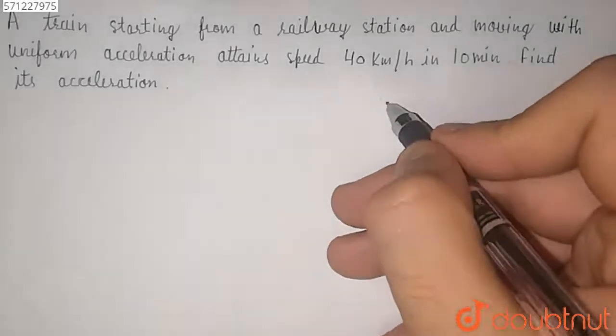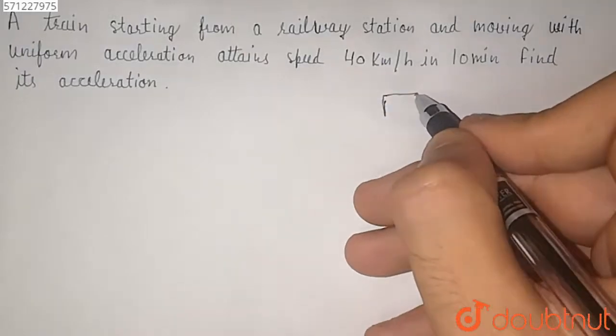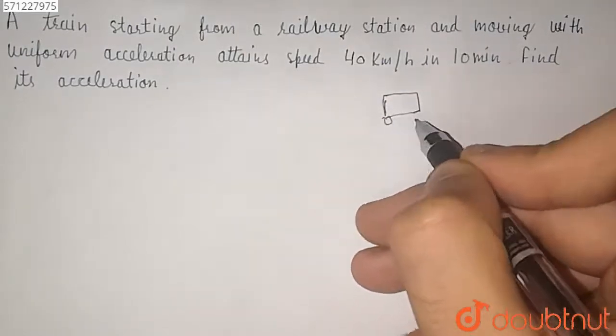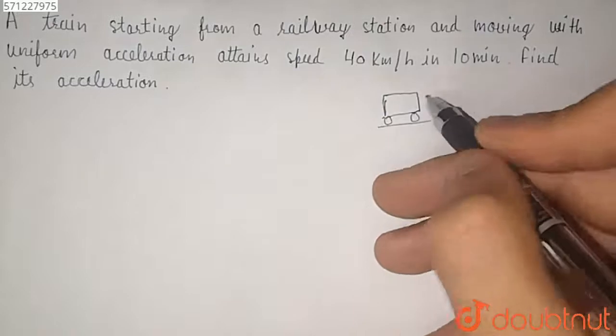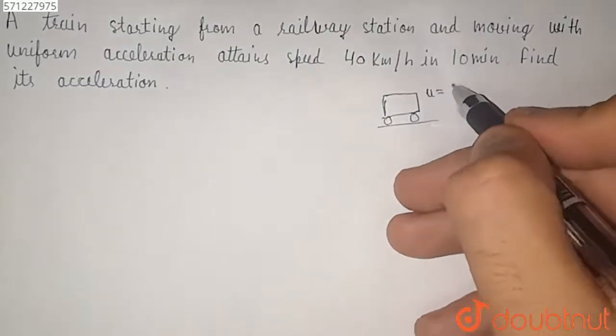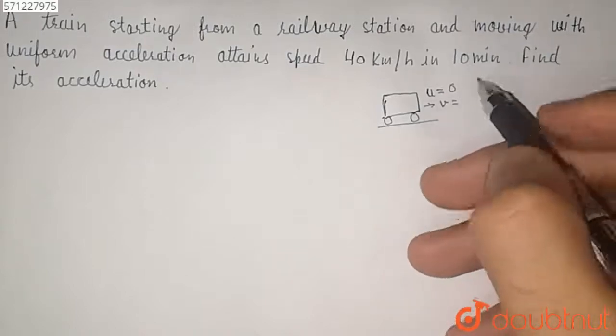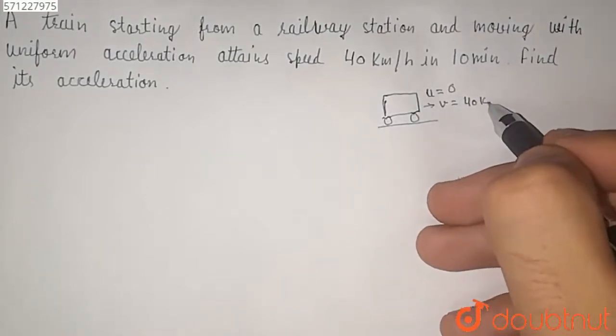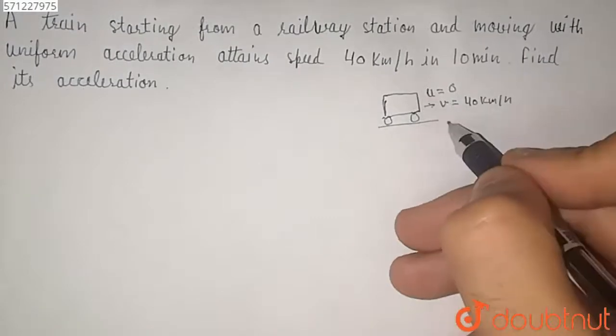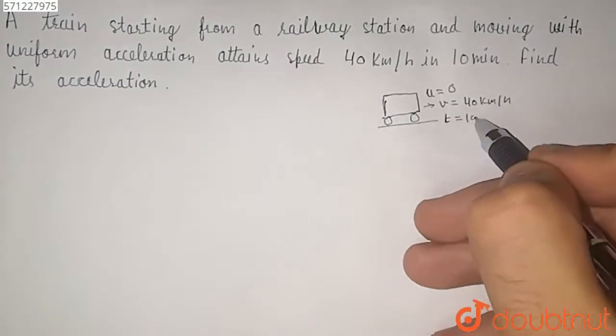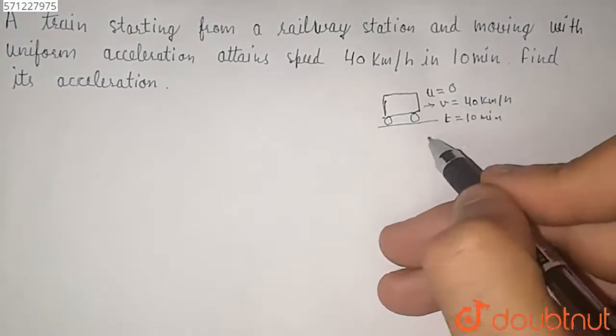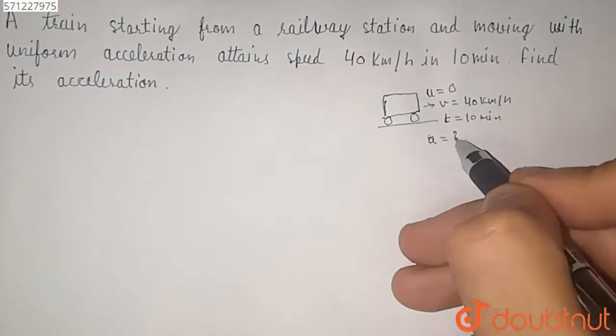So here we have given a train which has initial velocity of 0 and reaches to v, that is velocity 40 km per hour, in time 10 minutes. So we have to find the acceleration here.